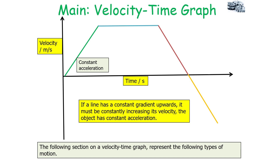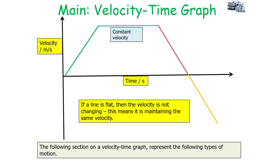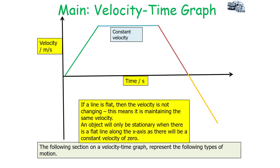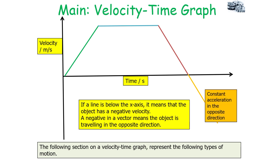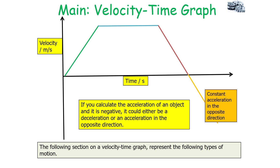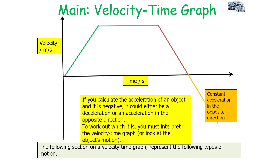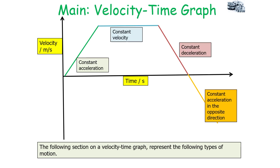The sections of a velocity-time graph represent the following types of motion: a constant upward gradient shows constant acceleration — the object is constantly increasing its velocity. A flat line means constant velocity; if the flat line is along the x-axis, the object is stationary with a constant velocity of zero. A constant downward gradient shows constant deceleration. If the line is below the x-axis, the object has a negative velocity — it is travelling in the opposite direction, so we have constant acceleration in the opposite direction. If you calculate a negative acceleration, it could be deceleration or acceleration in the opposite direction — you must interpret the graph or the object's motion to determine which.